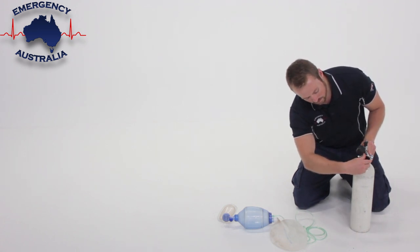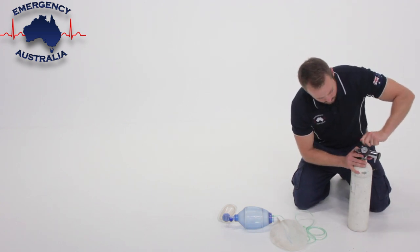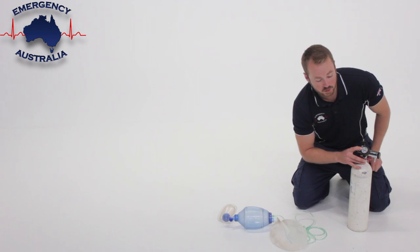Set the regulator to zero, turn it on, and from there we can see that we've got half a bottle left.